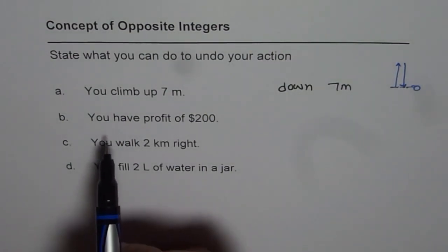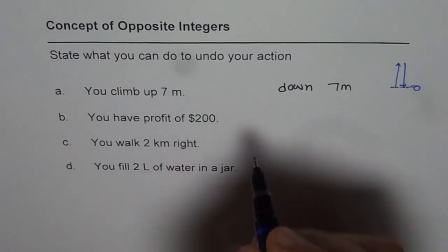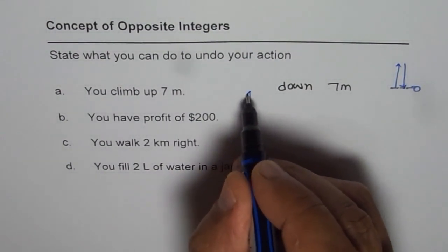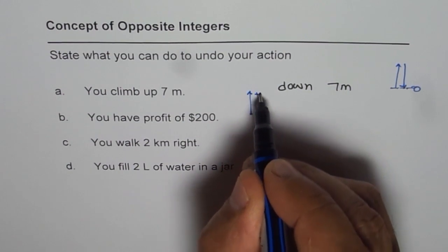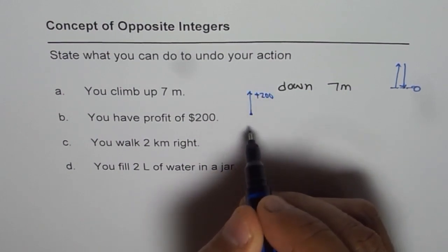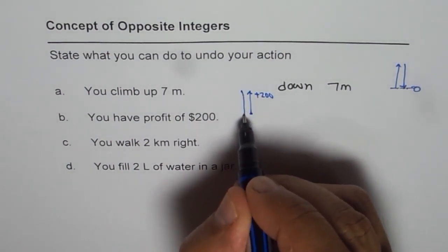Next statement is, you have profit of $200. That means you gained $200. So you got some gain which is plus 200. So the reverse of that should be loss of 200.